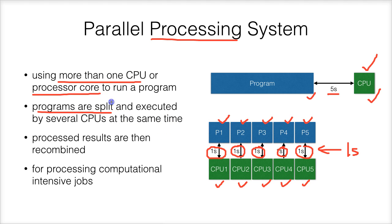But they have to be split into five parts. The programs are split and executed by several CPUs at the same time. After that, the processed results are then recombined.